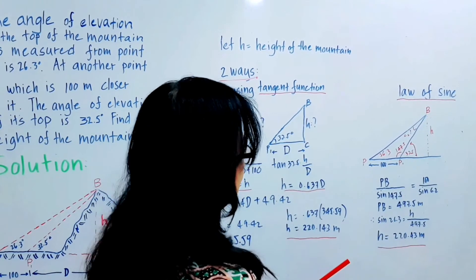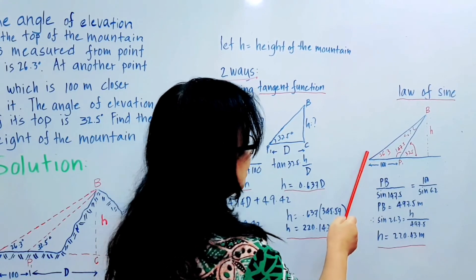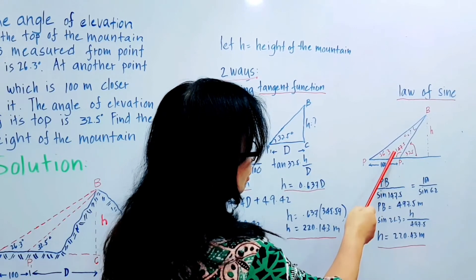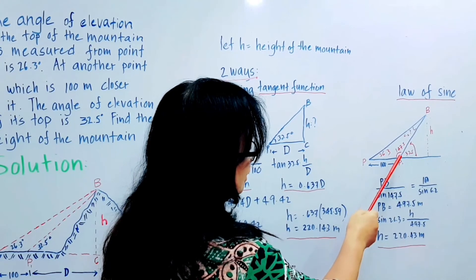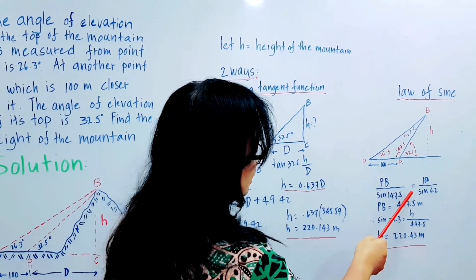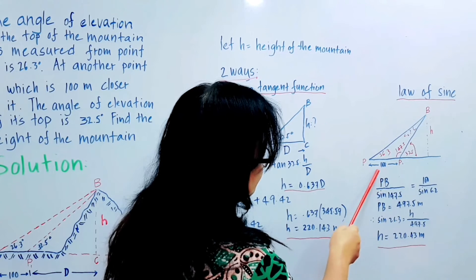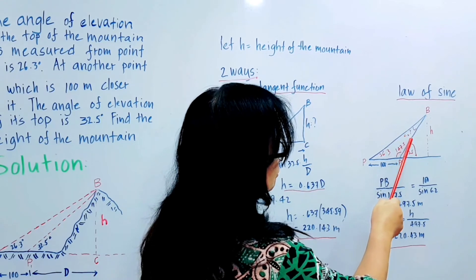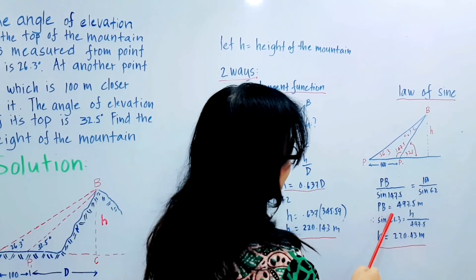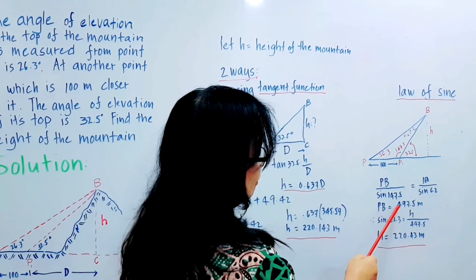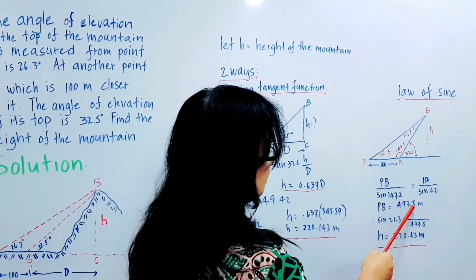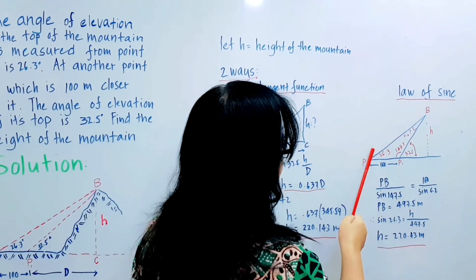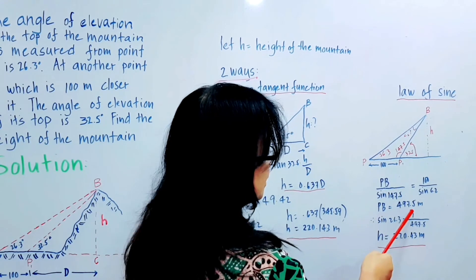Therefore, using the law of sine, PB, which is this side, over sine 147.5, because that's the opposite angle, equals the given side 100 over the opposite angle which is 6.2. PB therefore equals 497.5 meters. So we found this side, its length is 497.5 meters.